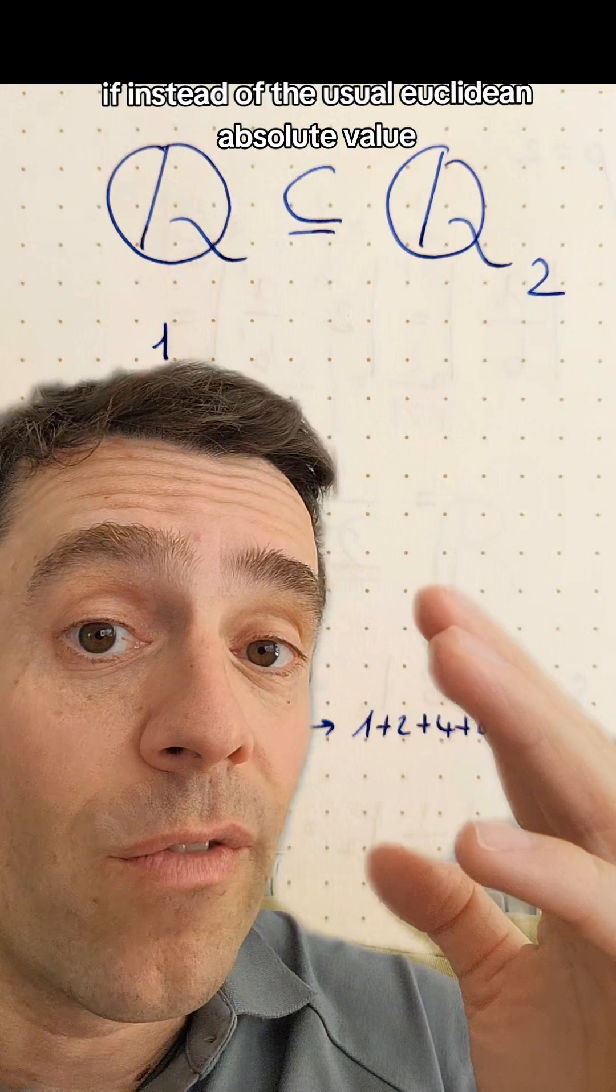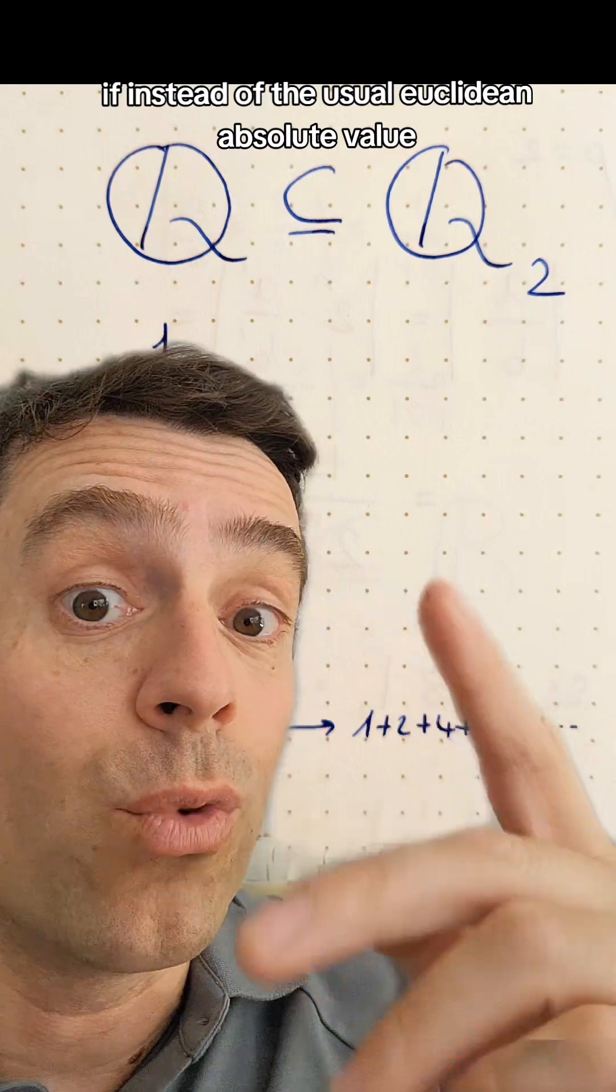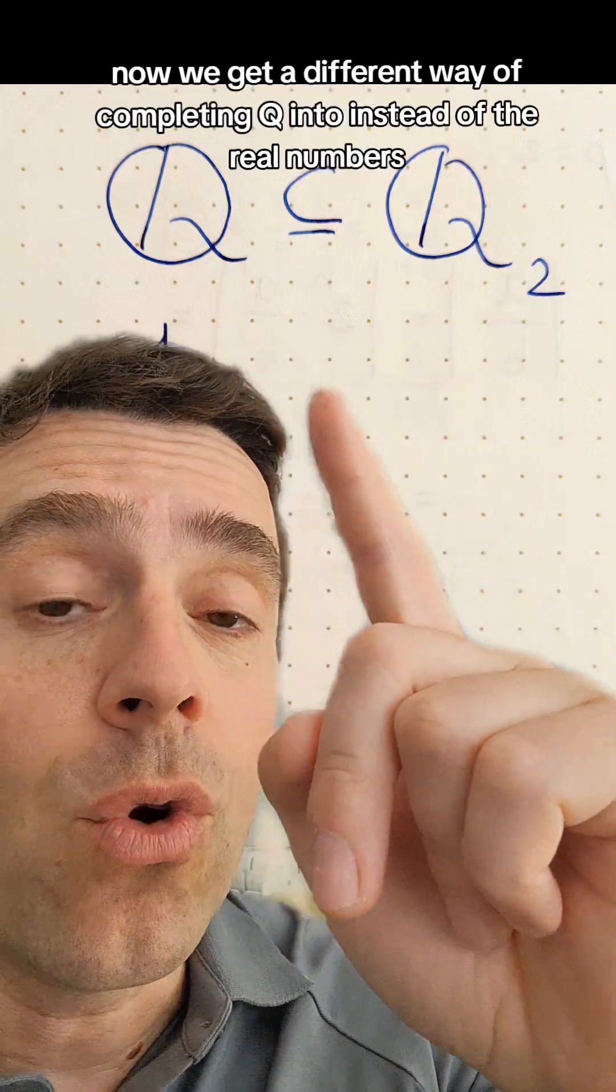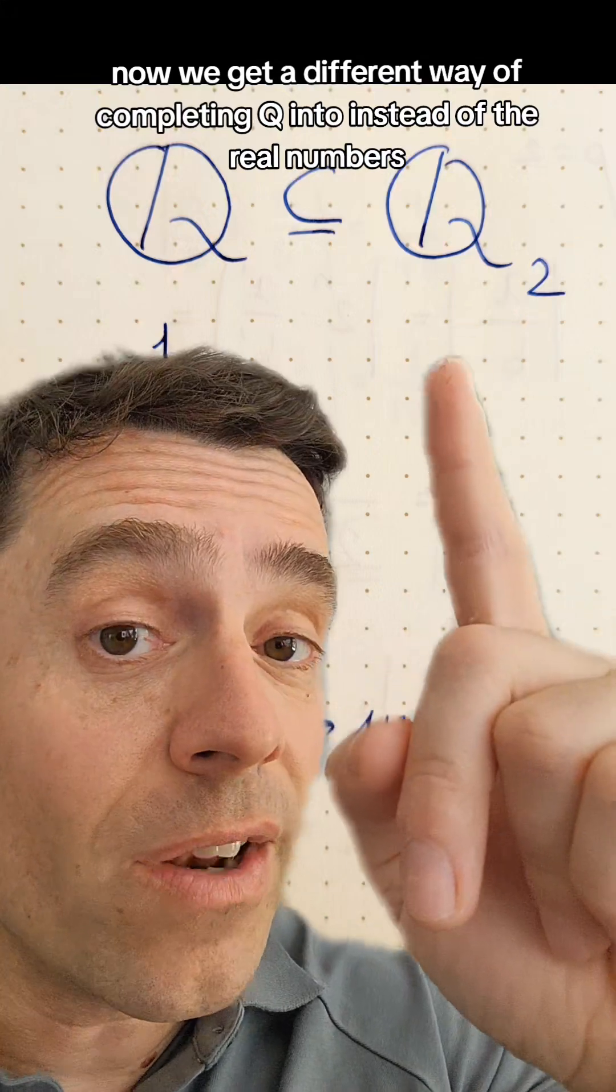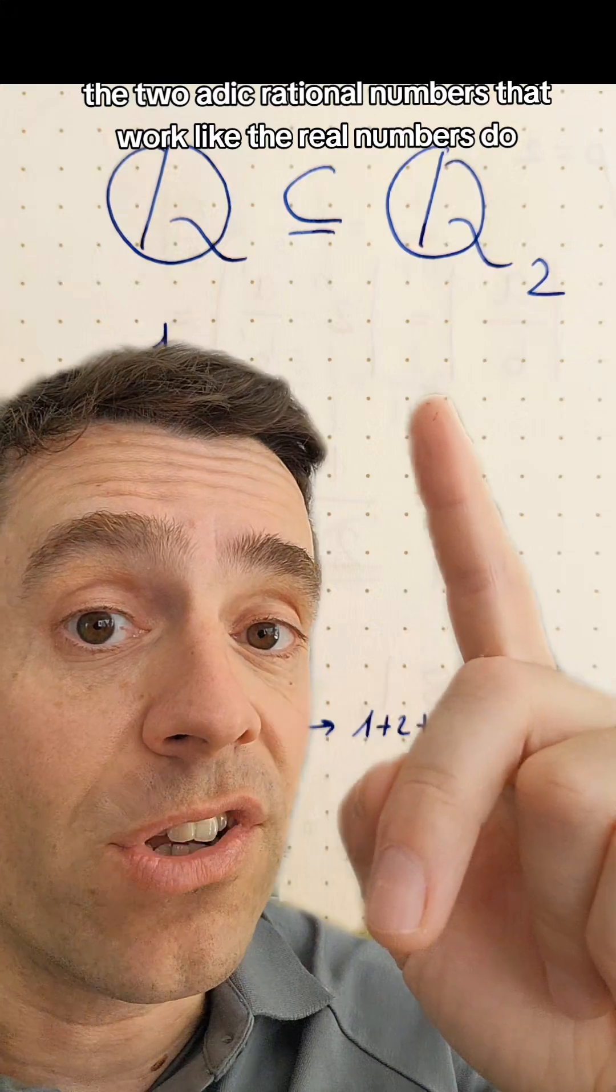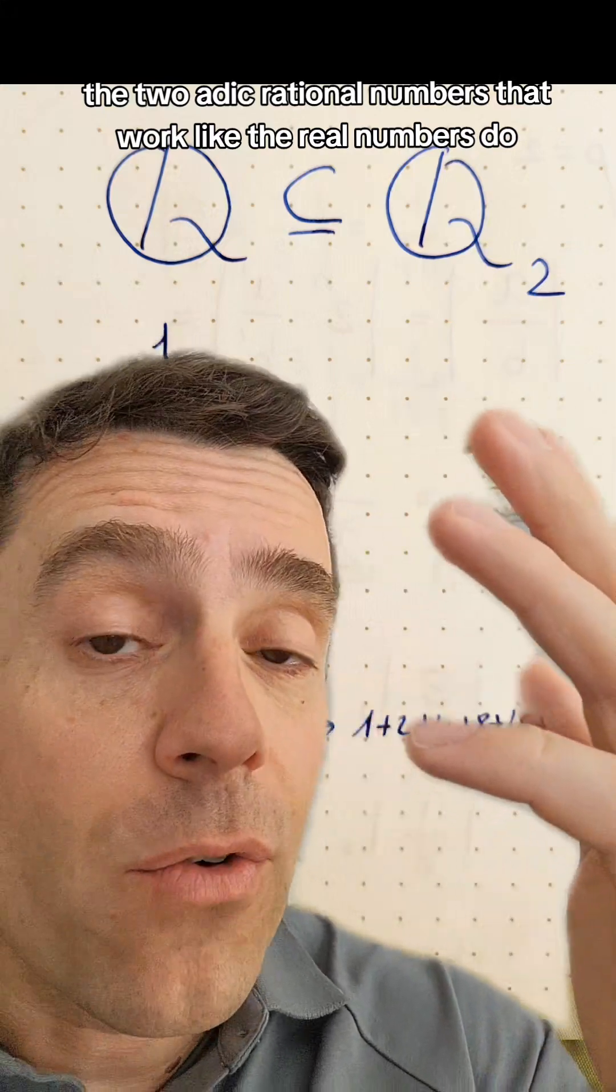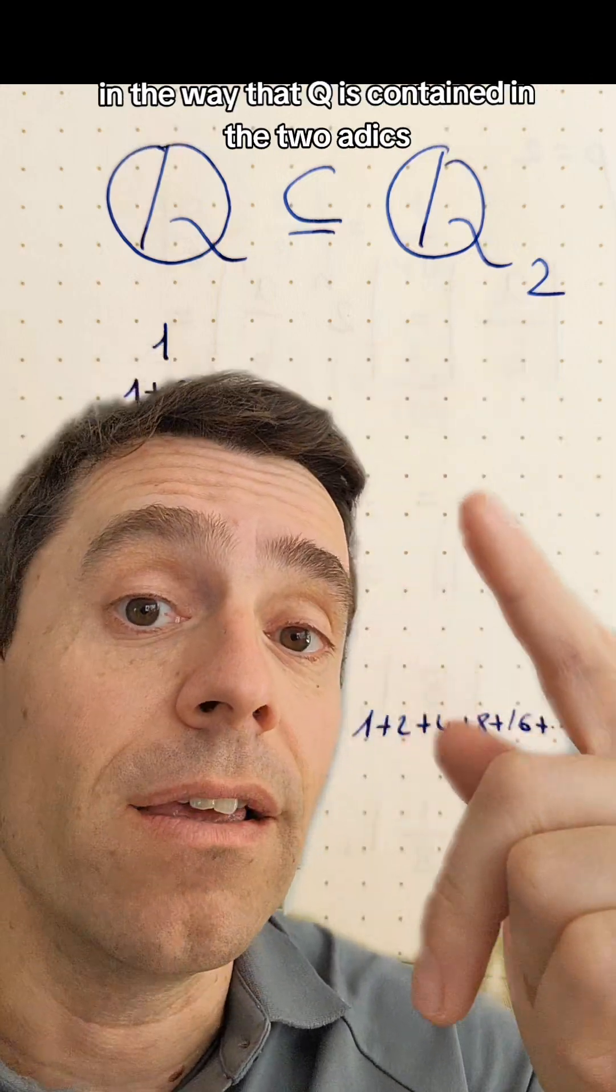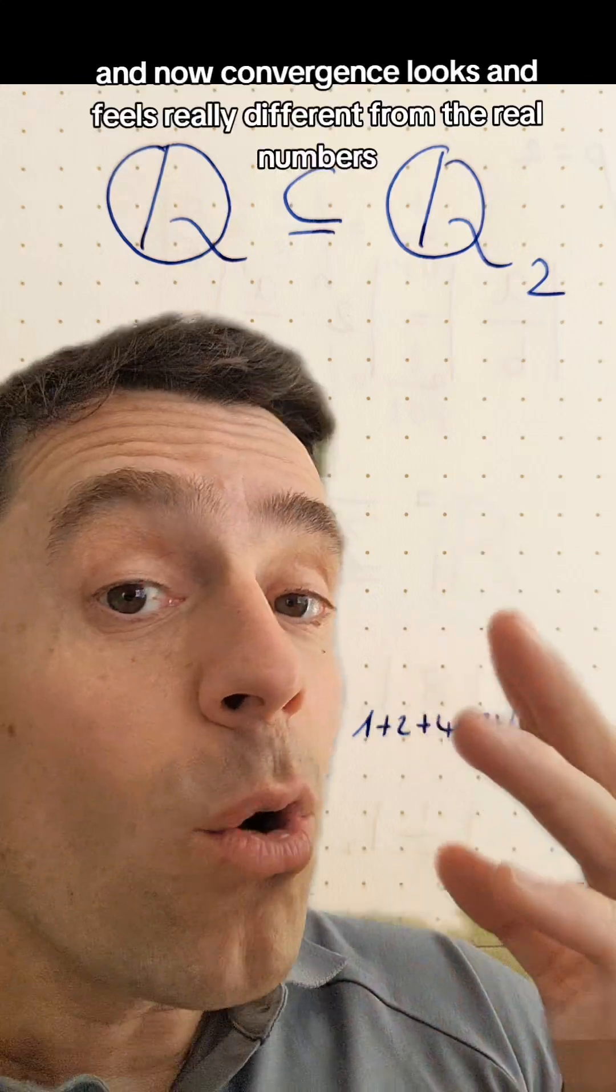If instead of the usual Euclidean absolute value, we use the 2-adic absolute value, now we get a different way of completing Q into, instead of the real numbers, what we call Q2, the 2-adic rational numbers, that work like the real numbers do in the way that Q is contained in the 2-adics.